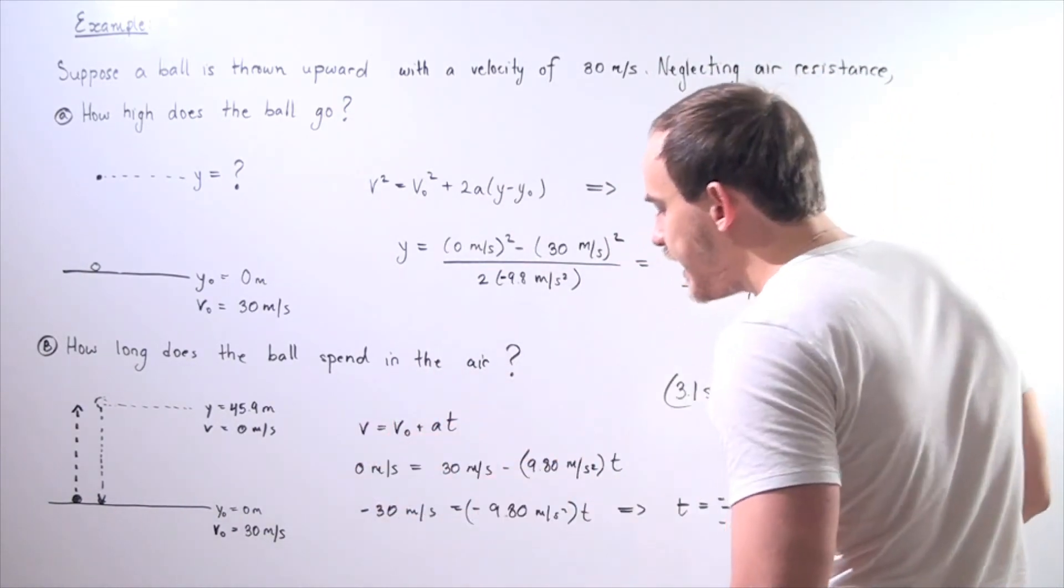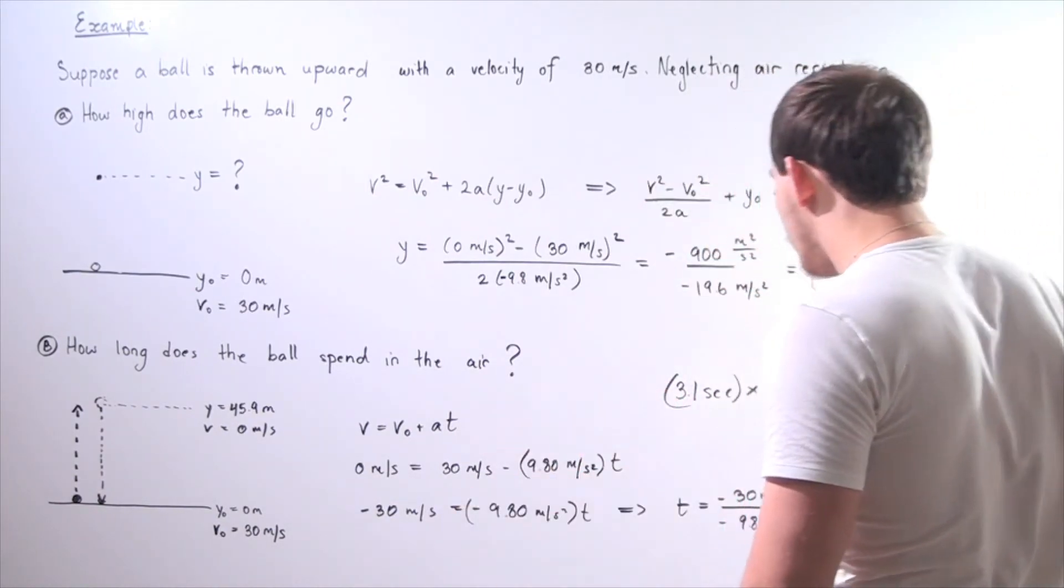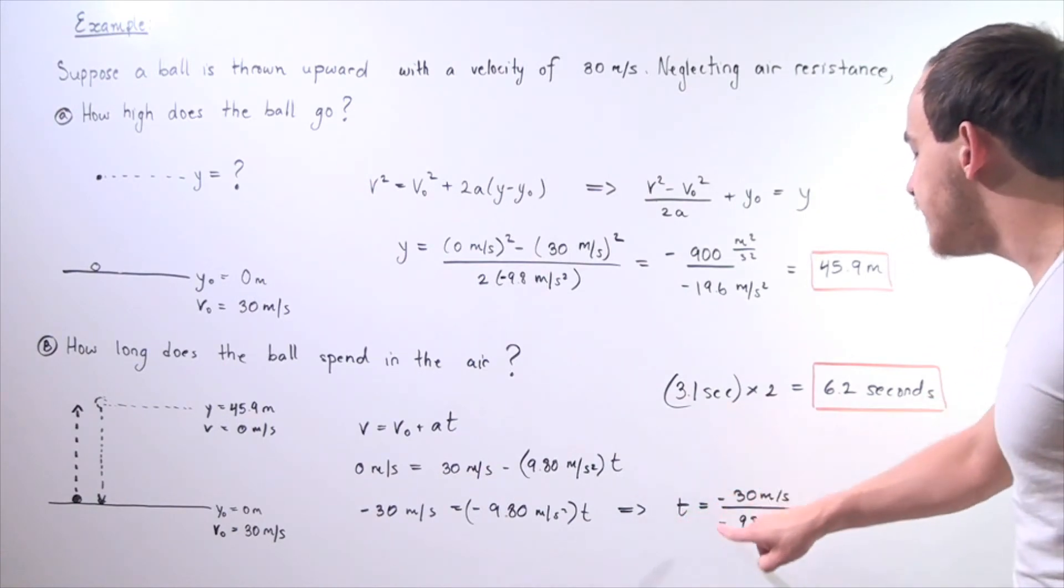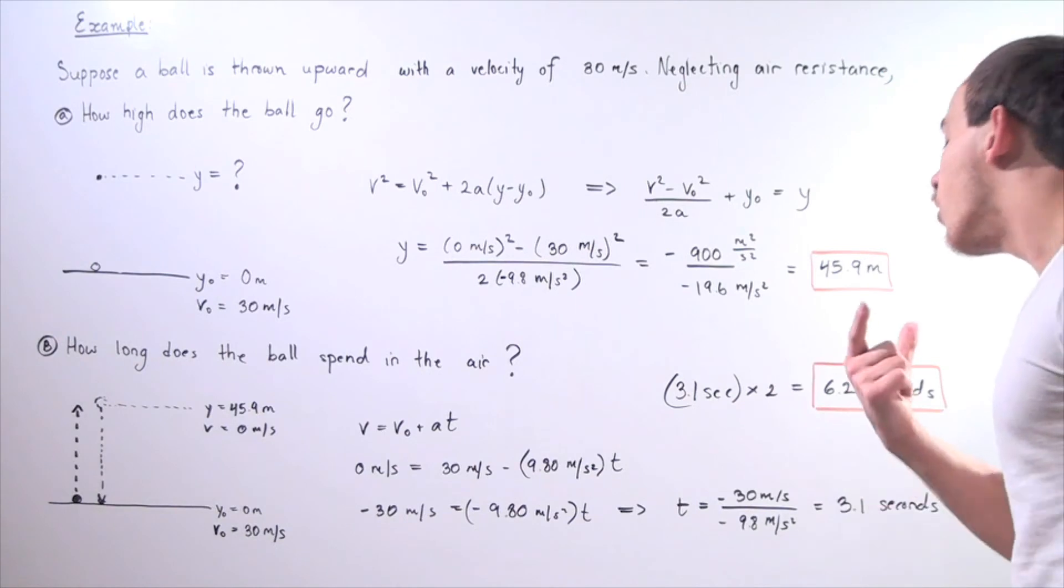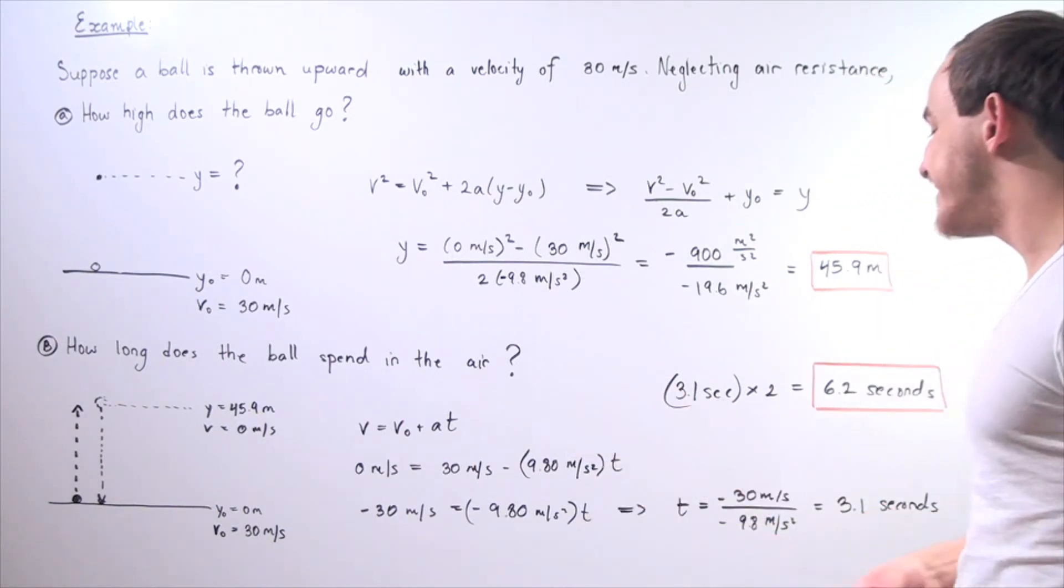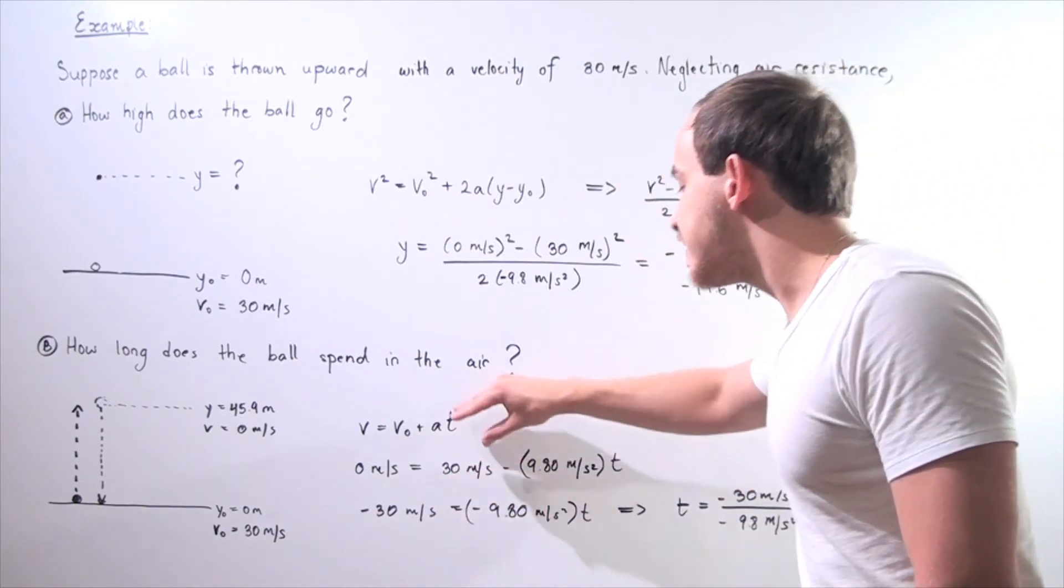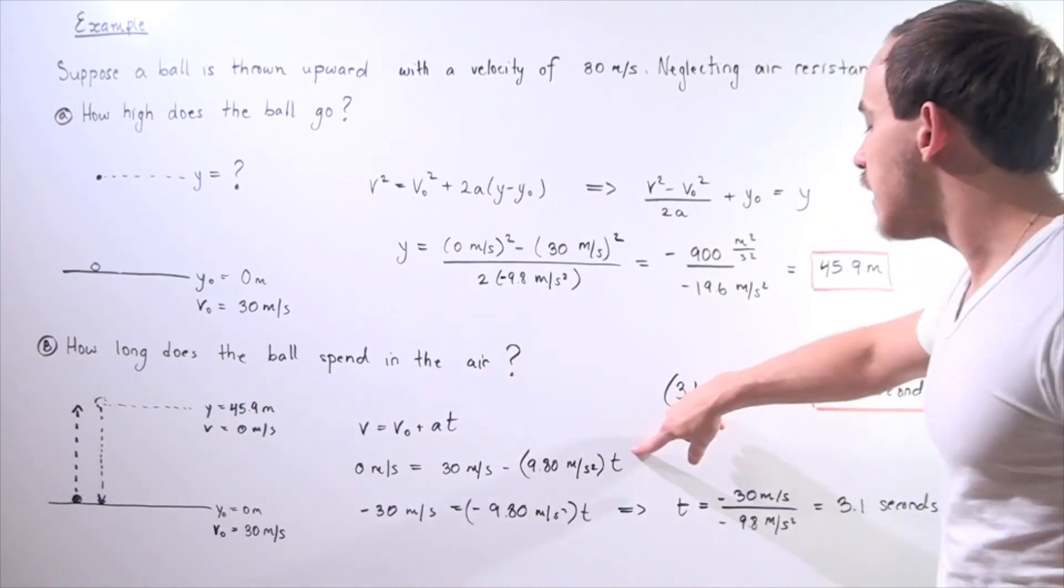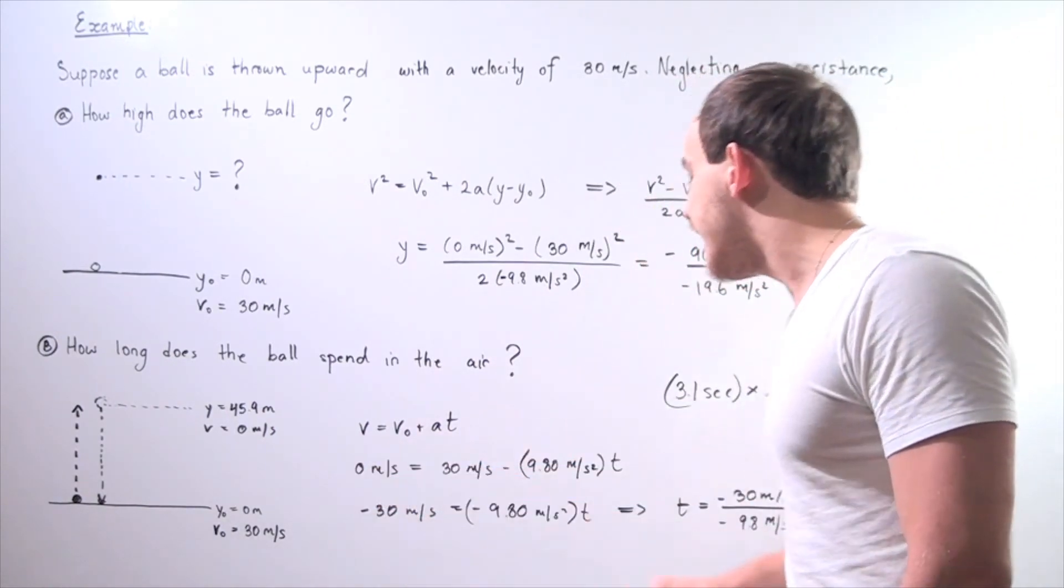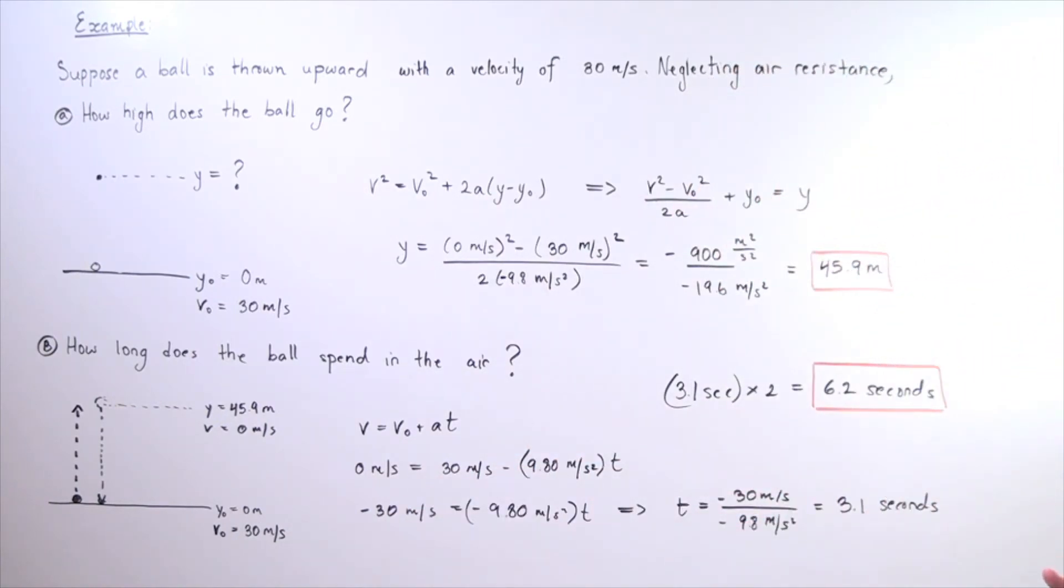So we plug all these values in, and then we solve for t, and we find our number by doing the following calculations. So we get t is equal to, top and bottom are negative. Why? Well, once again, our acceleration is actually our deceleration. It's negative, and we have to bring this 30 meters per second to the other side, because we're solving for t. So when we bring this to the other side, it becomes negative. We divide both sides by negative 9.8, and we get the following value.